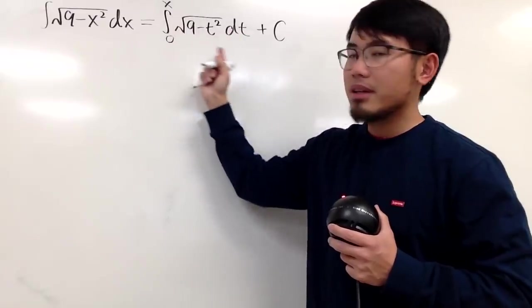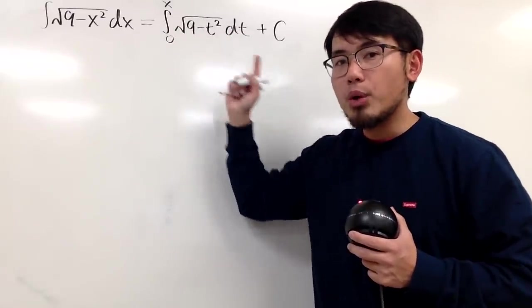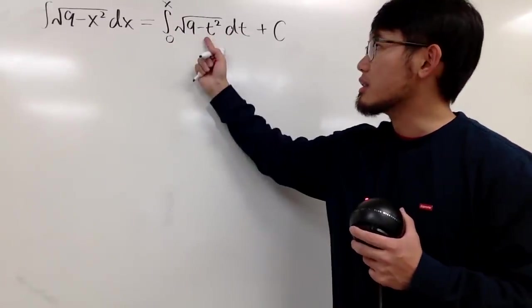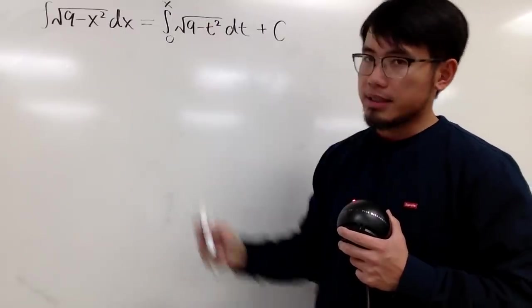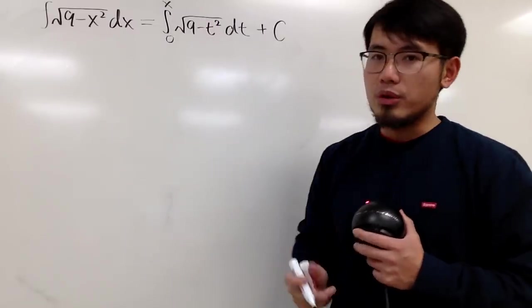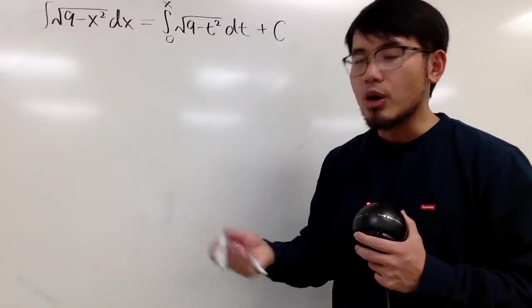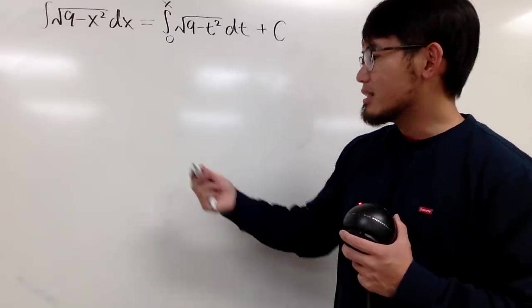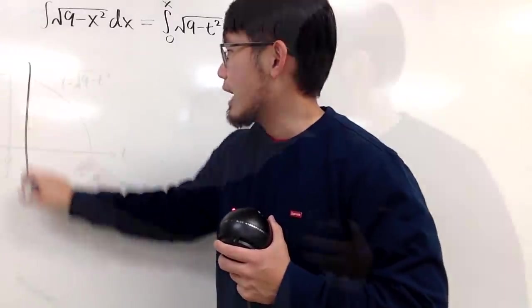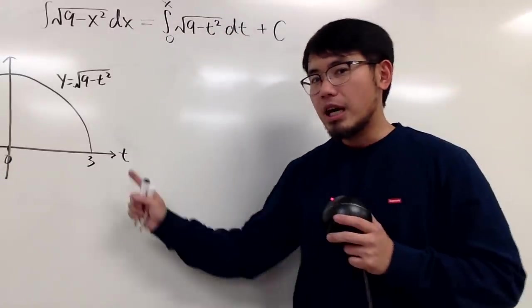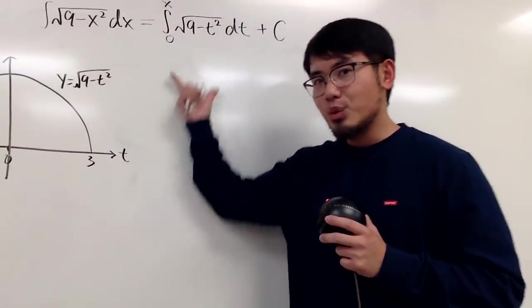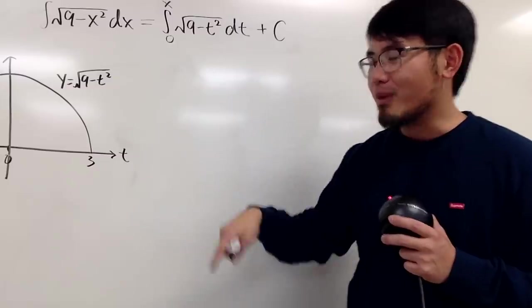Because we have a definite integral now, we can interpret this as the area under this curve from 0 to x. And this, as we all know, is just the semicircle with radius 3. So let me just draw that for you guys. First, notice I labeled this with t because we are using t right here.